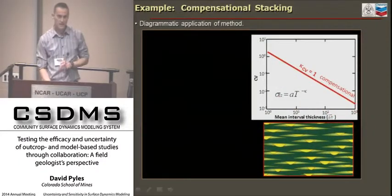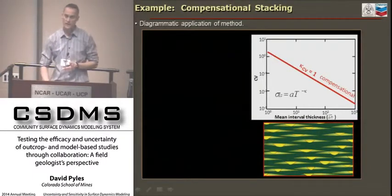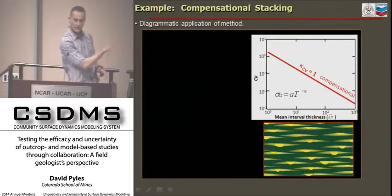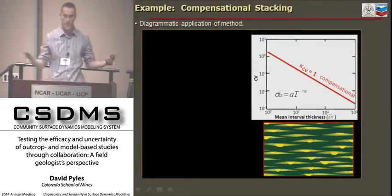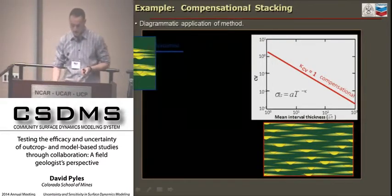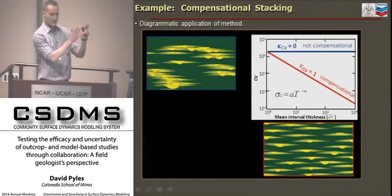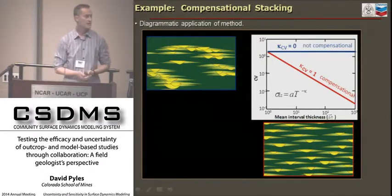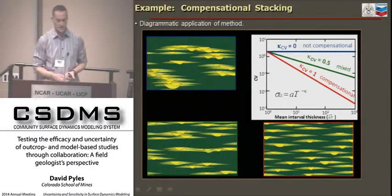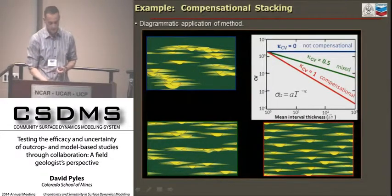I really want to focus on these variables: local sedimentation rate and long-term subsidence rate. To develop an intuition: if something is perfectly compensational—as shown in the bottom right image where the channel levee system is moving all over the place, beautifully compensationally stacked—that would have a compensation index of one. However, if the sediment transport system is sticky and just aggrading, it would have a compensational index of zero. The diagram shows something in between the two. These lines on the graph will become more obvious when I start to fit this with real data from an outcrop.